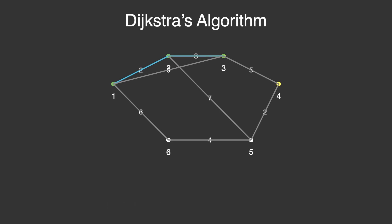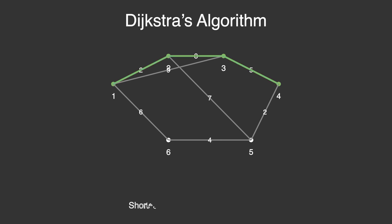Then it expands further and reaches Node 4. Step by step, Dijkstra's algorithm keeps building the shortest paths. And here, the path from Node 1 to Node 4 is found: 1 to 2 to 3 to 4. Pretty neat, right?